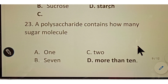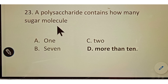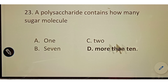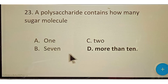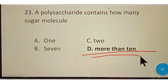Question number twenty-three: a polysaccharide contains how many sugar molecules? Options given: A. 1, B. 7, C. 2, D. More than 10. The correct answer is option D, more than 10. A polysaccharide contains more than 10 sugar molecules.